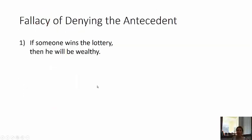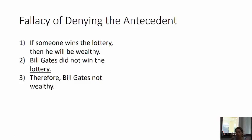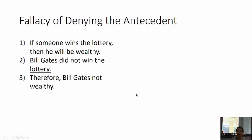Here's another example of the fallacy of denying the antecedent: if someone wins the lottery, then he will be wealthy. Bill Gates did not win the lottery. Therefore, Bill Gates is not wealthy. This commits the fallacy of denying the antecedent — if P then Q, not P, therefore not Q. That's the bad pattern. Just because someone does not win the lottery doesn't mean they're not wealthy. Premises one and two can be true while the conclusion is false, so this argument is invalid.